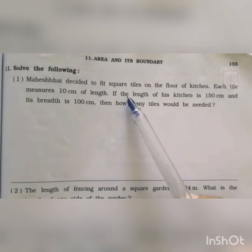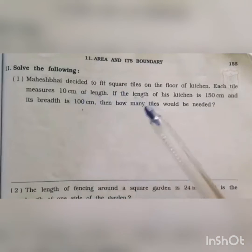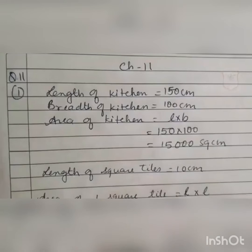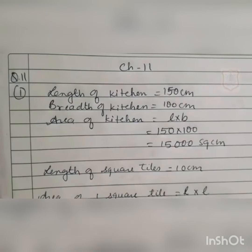The kitchen length is 150 cm and breadth is 100 cm. Maheshwai wants to fit square tiles in his kitchen, so first we will find the area of the kitchen. The length of the kitchen is 150 cm and the breadth is 100 cm. The area of the kitchen is L into B, so multiplying 150 by 100, we get 15,000 square cm.